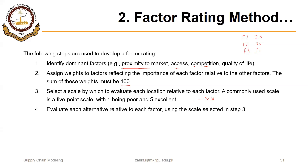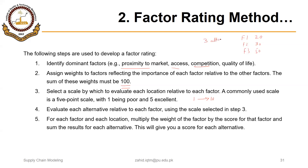We have three alternatives, and all three will be compared with respect to these factors. Step five: for each factor and each location, multiply the weight of the factor by the score for that factor, then sum the results for each alternative. You add the product of the weight of the factor and the score for that factor for a specific location, then select the alternative with the highest score.